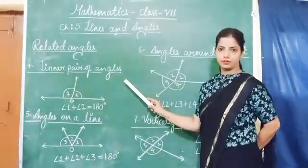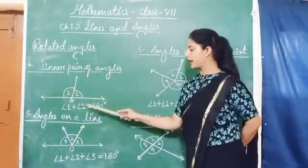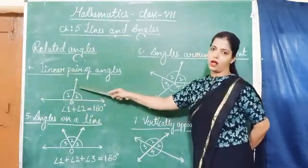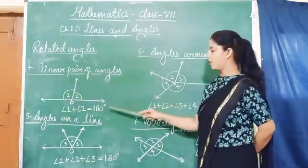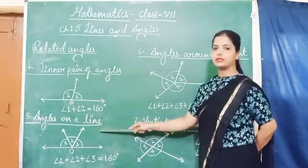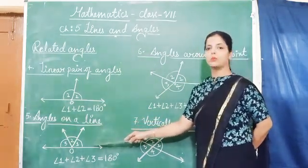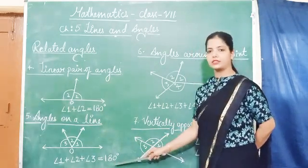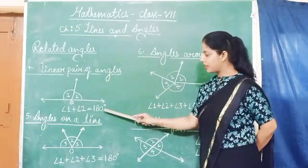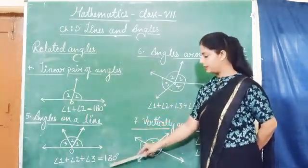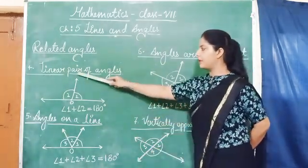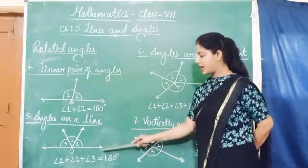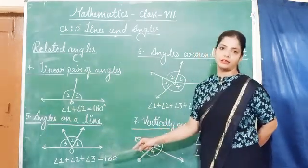Linear pair of angles: the sum of the two angles is always 180 degrees. Both angles should be on the same line with a common vertex and a common arm. Linear pair of angles are always supplementary. Next, angles on a line: we can take more than two angles on a line. The sum is always 180 degrees. The difference is that in a linear pair we take only two angles, whereas in angles on a line we can take three, four, or five angles.